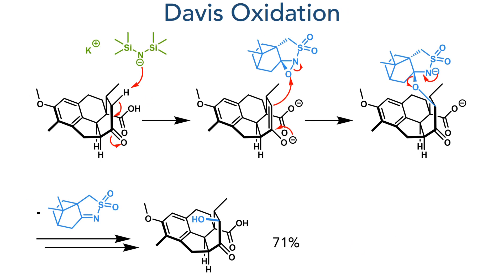Taking this compound forward, it was further oxidized — this time with a Davis oxidation. It is first deprotonated with potassium HMDS, forming an enolate adjacent to the ketone. This enolate attacks the oxaziridine of the Davis reagent, forming the carbon-oxygen bond. This is then eliminated as an alkoxide, which is protonated upon workup to generate the target alcohol in a 71% yield.